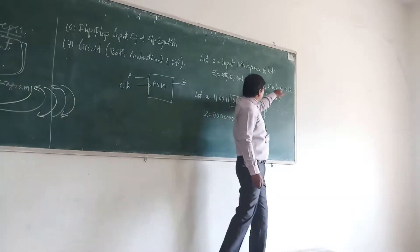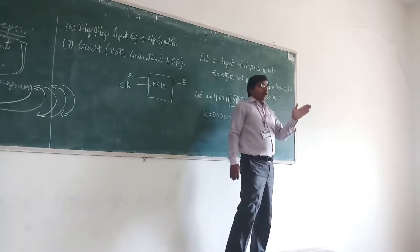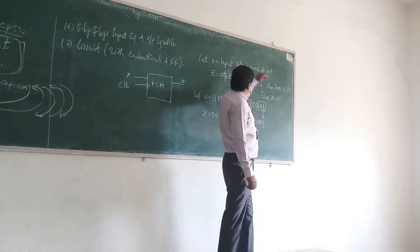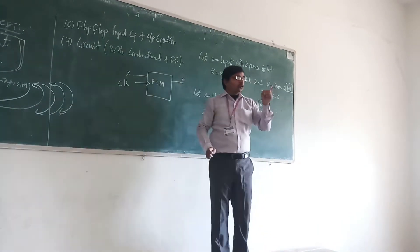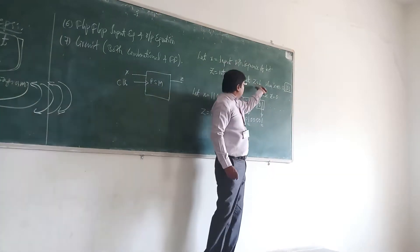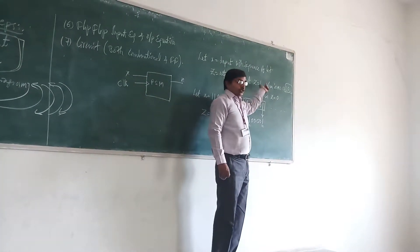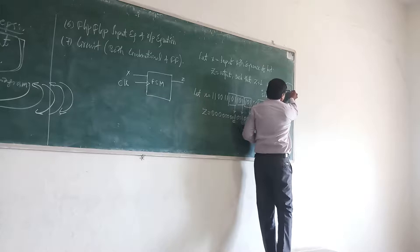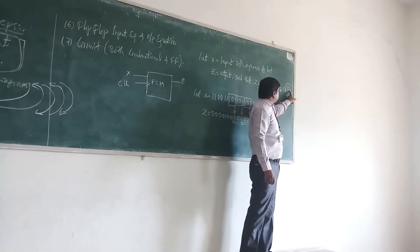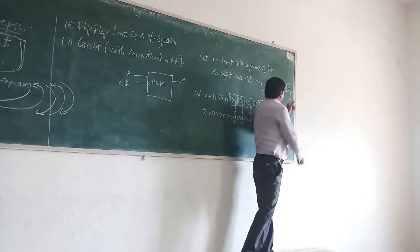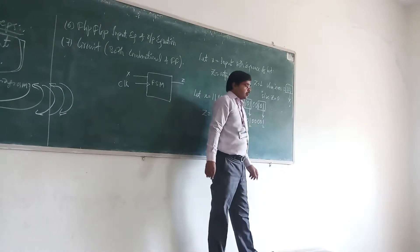When you have a series of 101. So in this sequence, when you are getting 101, then you will have z as 1. So where you are having at final here. So when you have a series 101, we set this one, you will get z to be 1. Otherwise, you will get z to be 0.